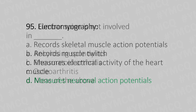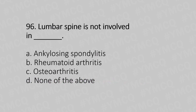Question 96: Lumbar spine is not involved in — option A: ankylosing spondylitis; option B: rheumatoid arthritis; option C: osteoarthritis; option D: none of the above.